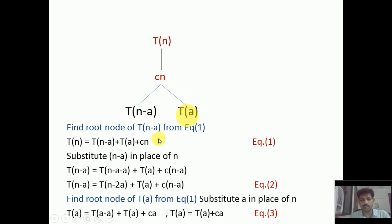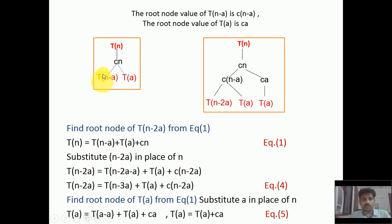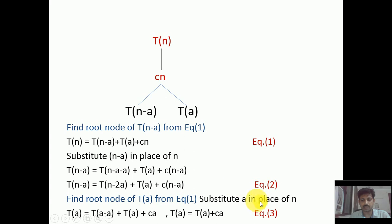To find the root node value of T(a), we substitute a in place of n in equation one, giving T(a) = T(a) + c·a — this is equation number three. The root node of T(a) is c·a, which has only one sub-part. Meanwhile, c(n-a) is divided into two parts: T(n-2a) and T(a).